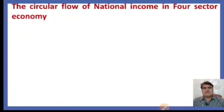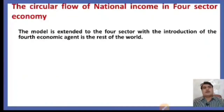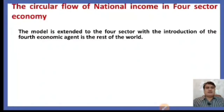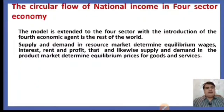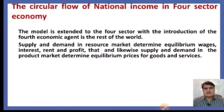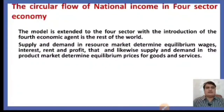The circular flow of national income in the four-sector economy is an extension of the three-sector economy model, extended by introducing the fourth economic agent: the rest of the world. Supply and demand in the resource market determines equilibrium wages, interest, rent, and profit, and likewise supply and demand in the product market determines the equilibrium price for goods and services.